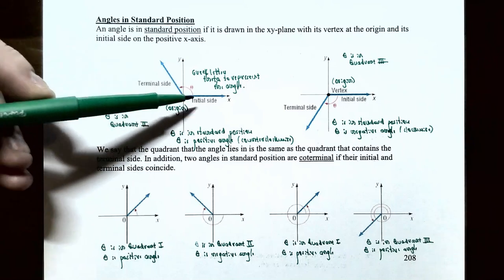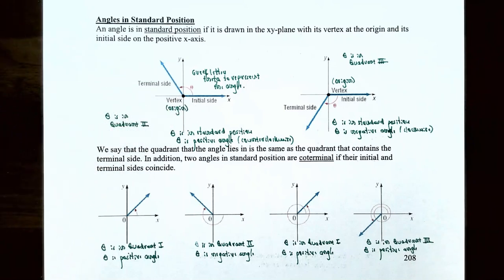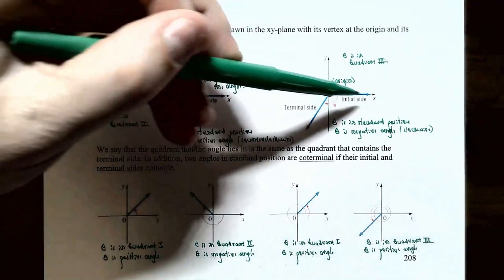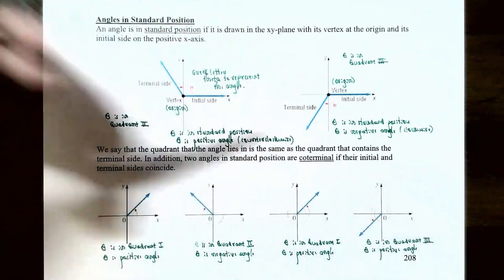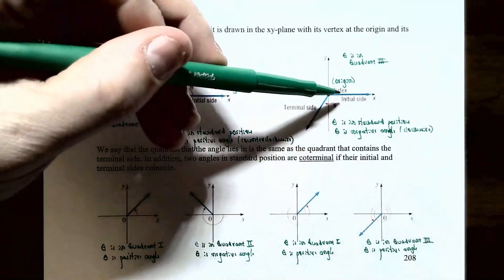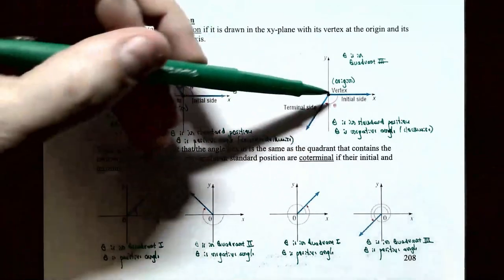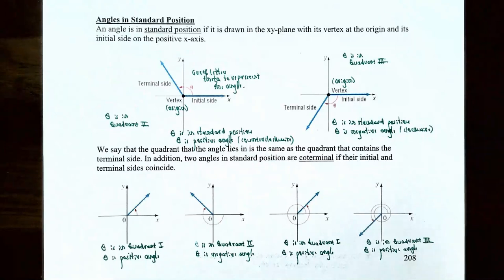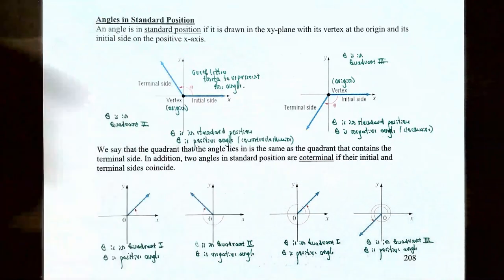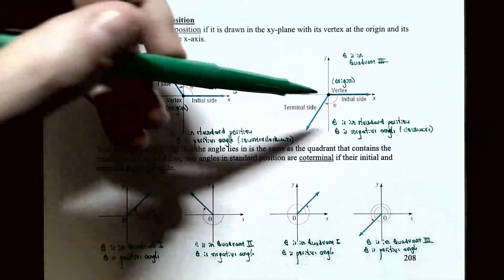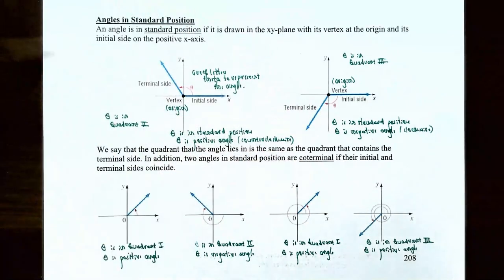If you have the initial side on the x-axis and the vertex at the origin, but you rotate the initial side clockwise to get to the terminal side, then theta will be a negative angle. The terminal side in this case is in quadrant three, so we say the angle theta is in quadrant three. The quadrant the angle lies in is the same as the quadrant that contains the terminal side.